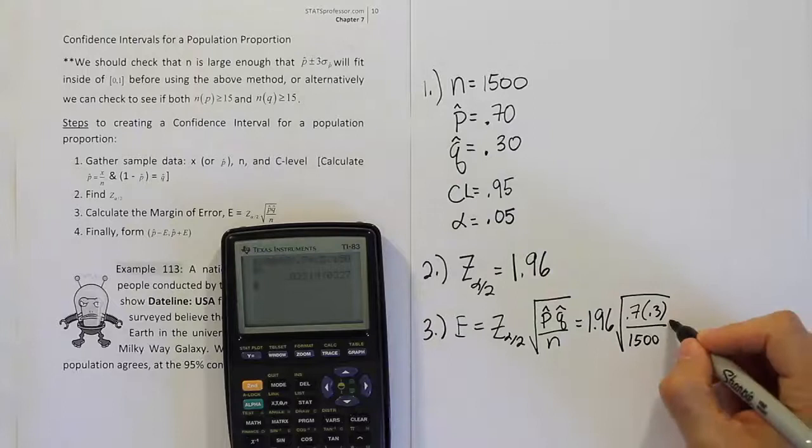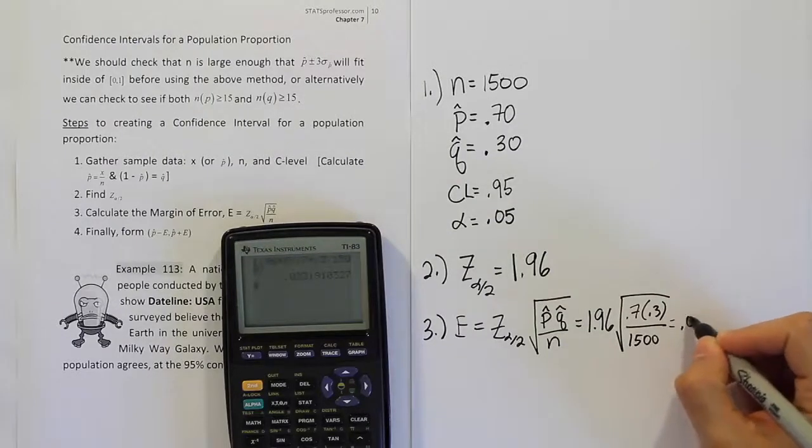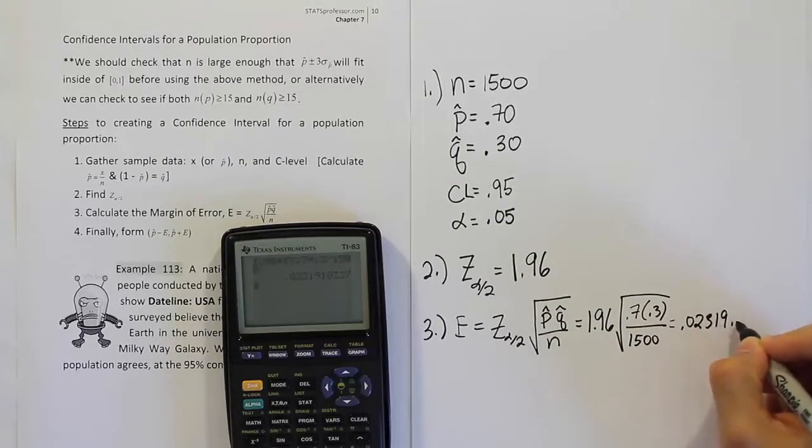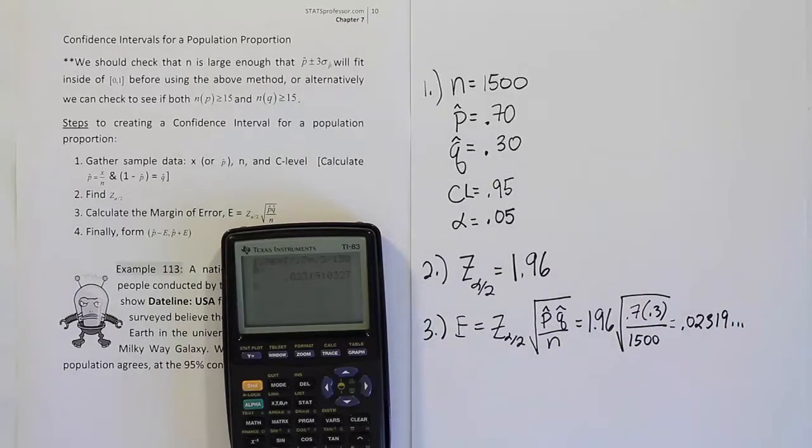So, we'll say 0.02319 and so on. I'll store that in my calculator.